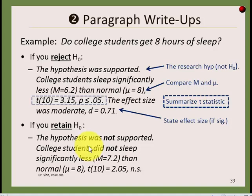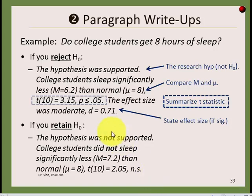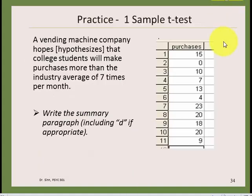If you were not able to reject the null hypothesis, the paragraph changes. You say the hypothesis was not supported, that college students did not sleep significantly less, give the sample mean and mu, and summarize the statistic showing no significant difference. Importantly, there is no d statistic here — if you don't have statistical significance you don't report effect size, because you didn't find a difference in the first place.